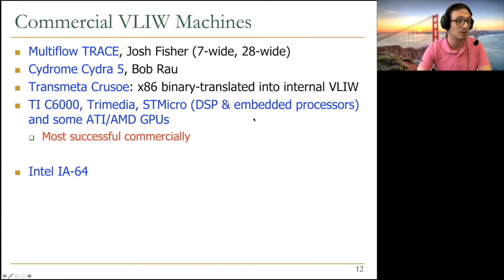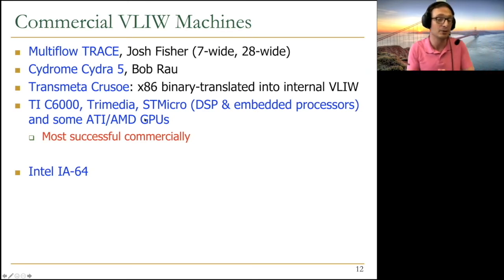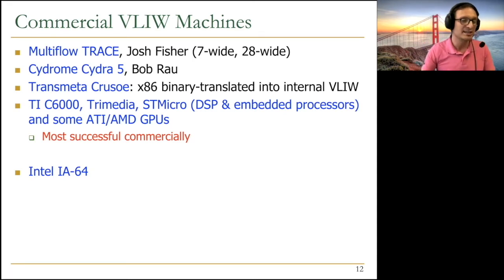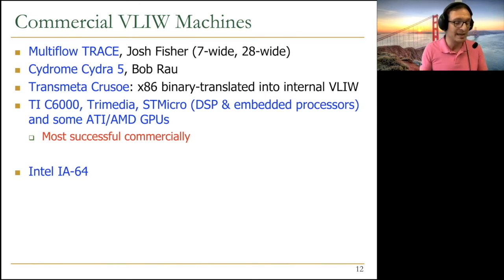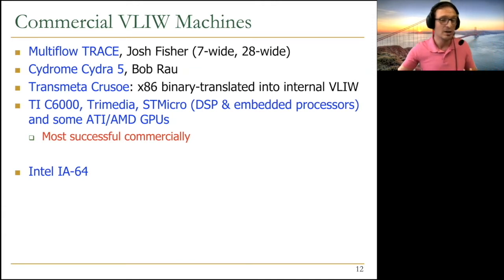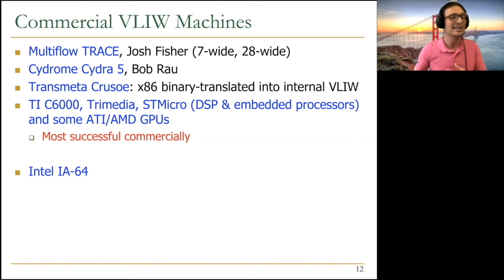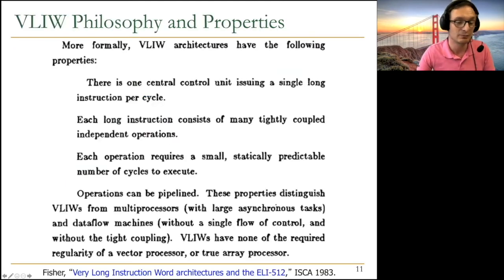VLIW has been extremely successful in the digital signal processing and embedded processor market, and was used in some early ATI and AMD GPU cores — though even those have since moved away from VLIW. Embedded systems still widely employ VLIW. The code in embedded systems is relatively simple and easy to compile, and statically predictable latencies align well with VLIW's requirements. Predictability also helps guarantee real-time deadlines, which is important in embedded systems.